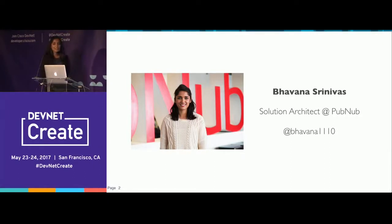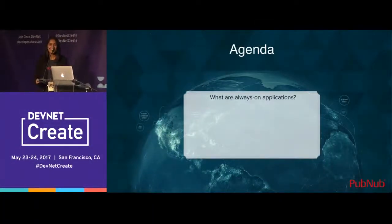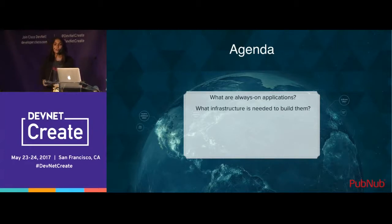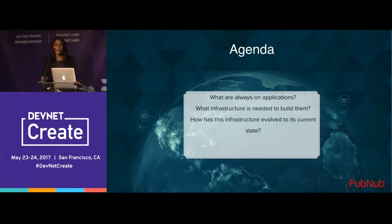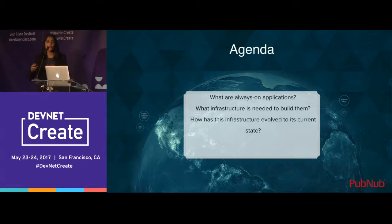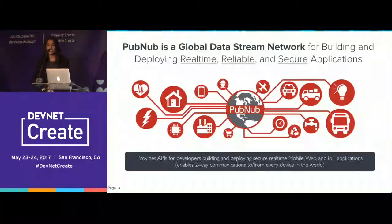I work at this company called PubNub. So here's what we're going to talk about: what an always-on application is, what infrastructure is needed to build them, how this infrastructure has changed from building static web and mobile applications to these always-on applications, and finally where microservices fit in.